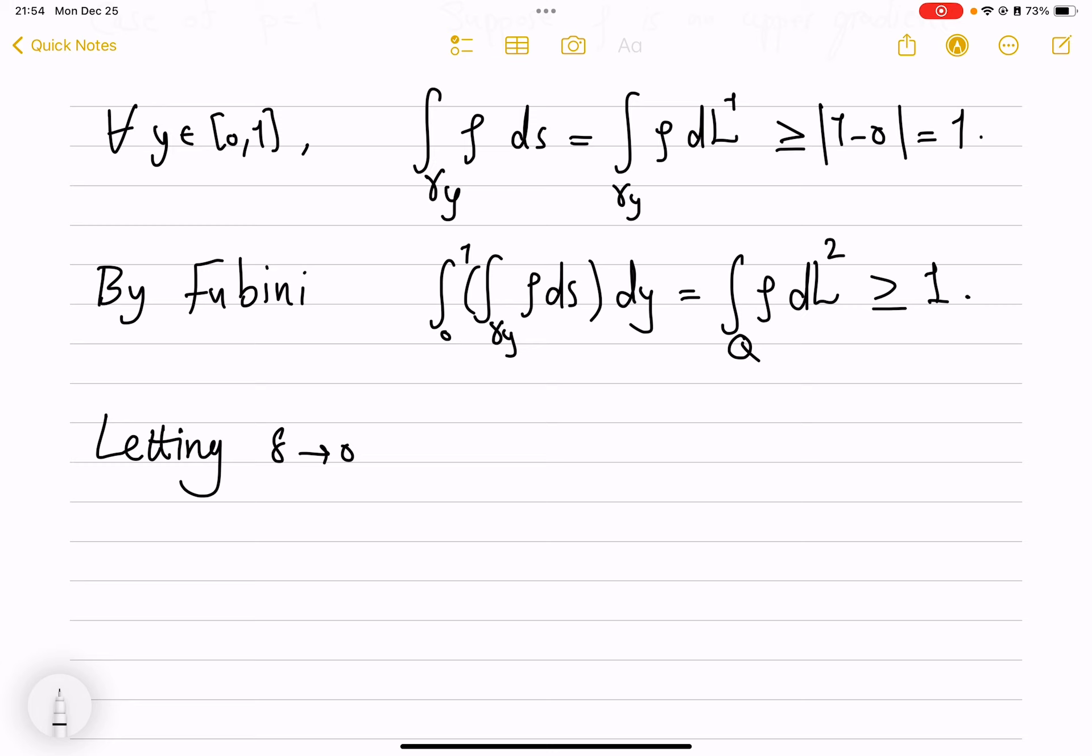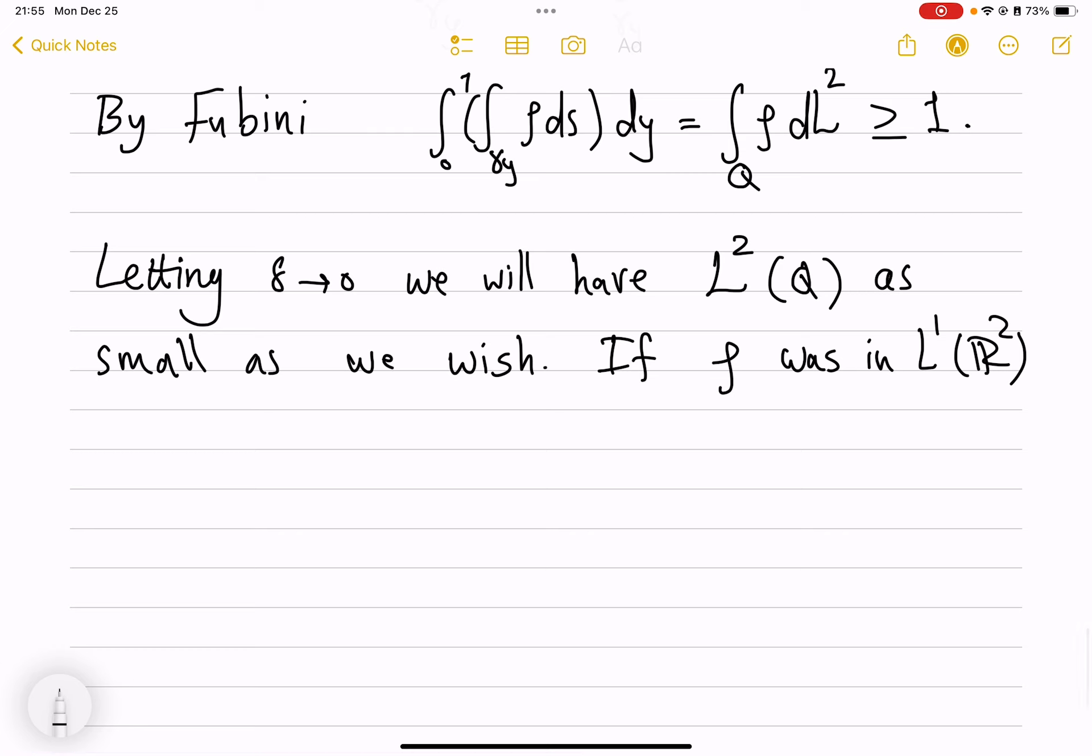Letting delta go to 0, we will have measure of Q as small as we wish. It goes to 0. It has height 1 and side length delta, so as small as we wish. If rho was in L1 of R2, remember that absolute continuity property of integrals,